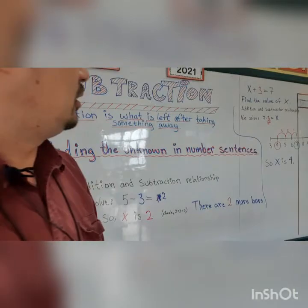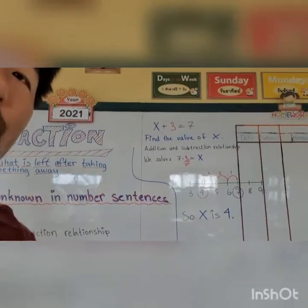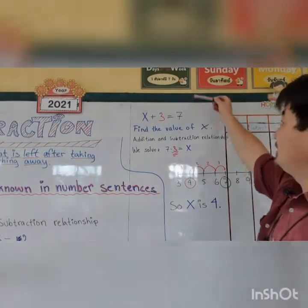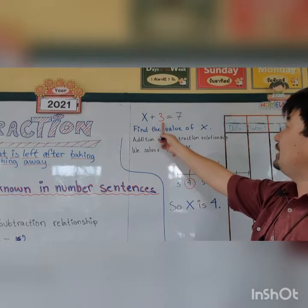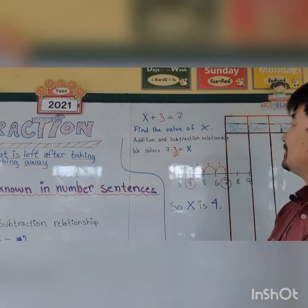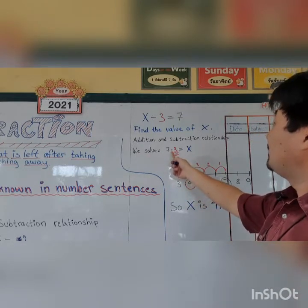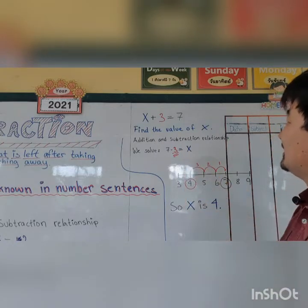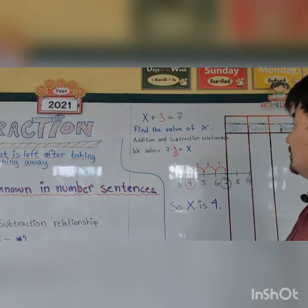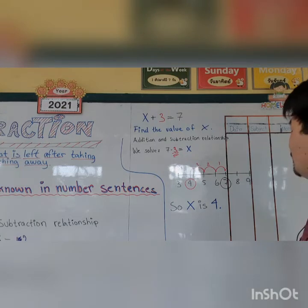Because we're going to do one more example — let's move the camera over here. So we have a number sentence: X plus 3 equals 7. Find the value of X — what is X? Addition and subtraction relationship, so we solve it: 7 minus 3 equals X.